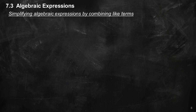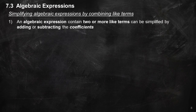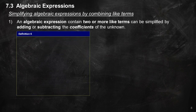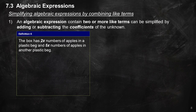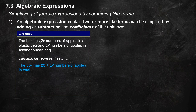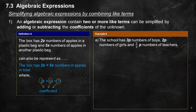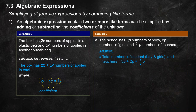Simplifying algebraic expressions by combining like terms. An algebraic expression containing two or more like terms can be simplified by adding or subtracting the coefficients of the unknown. Definition 6: The box has 2X numbers of apples in one plastic bag and 5X in another, represented as 2X plus 5X equals 7X, where 2, 5, and 7 are all called coefficients. Example 6A: The school has 3P boys, 2P girls, and 2/3P teachers. Total equals 3P plus 2P plus 2/3P equals 5 and 2/3 P.